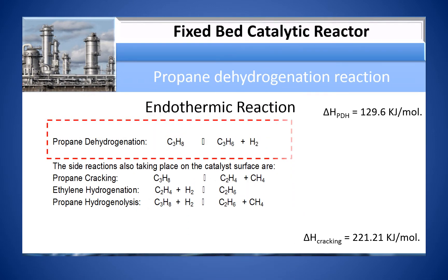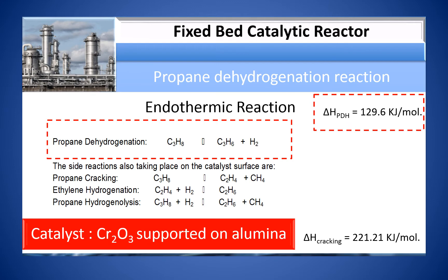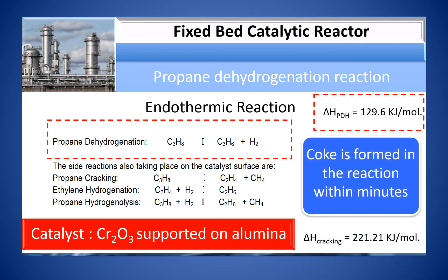The reaction considered here is dehydrogenation of propane on chromium oxide catalyst supported on alumina. Dehydrogenation is an endothermic reaction and hence consumes energy. The reaction shows propane dehydrogenating into propylene. Coke is formed in the reaction within minutes.